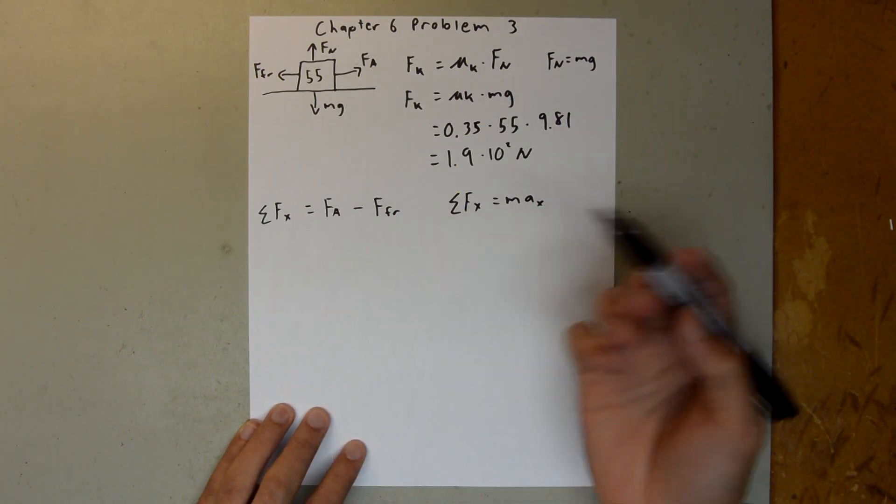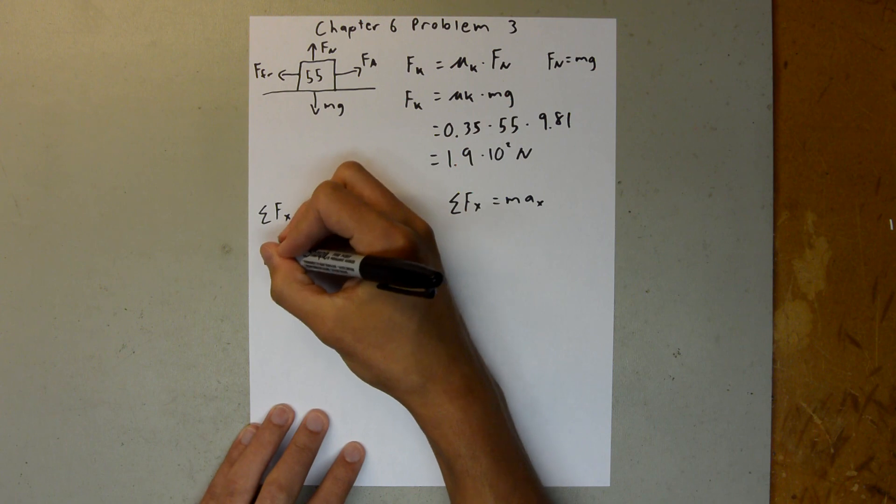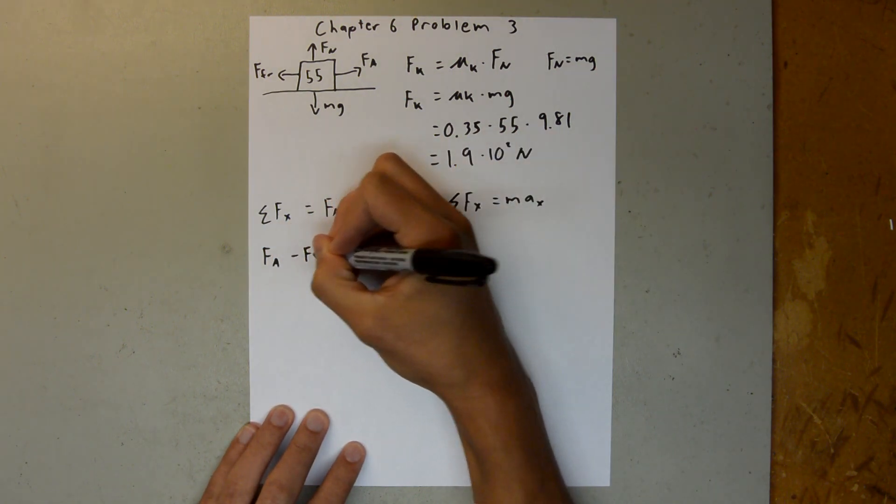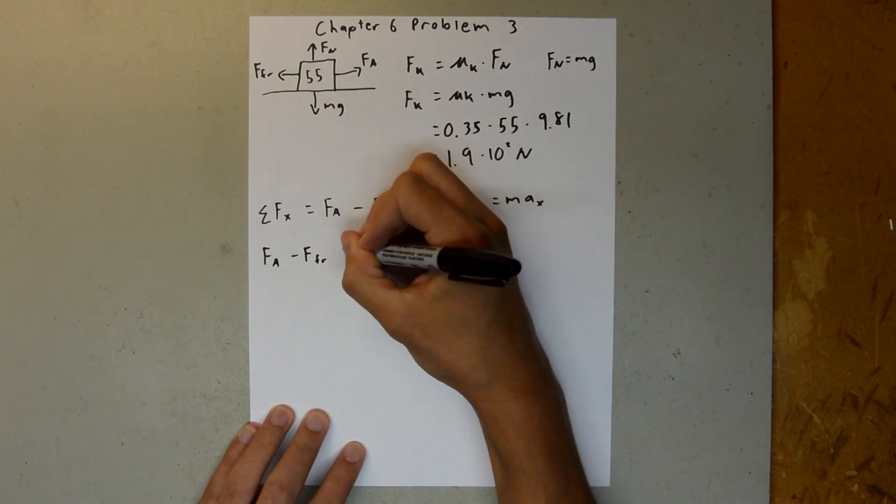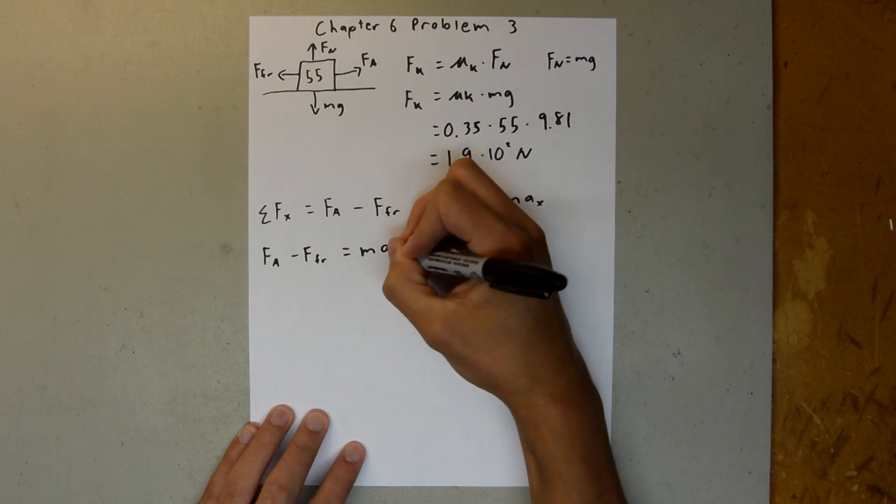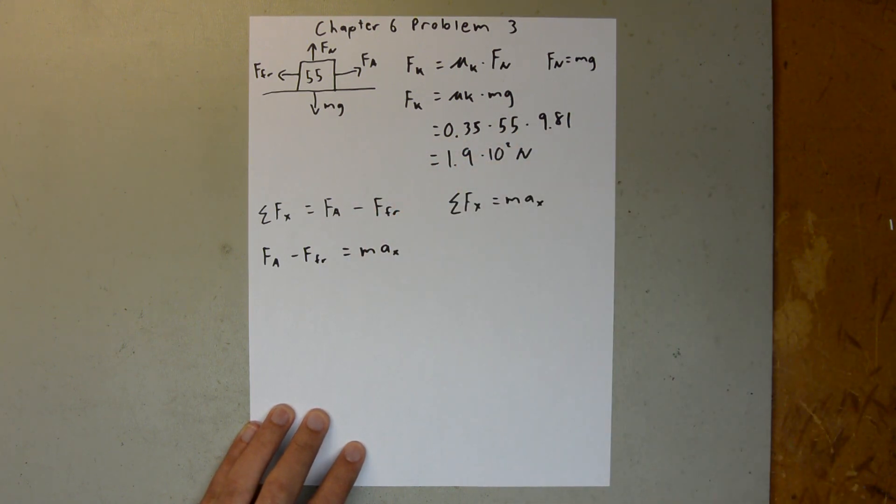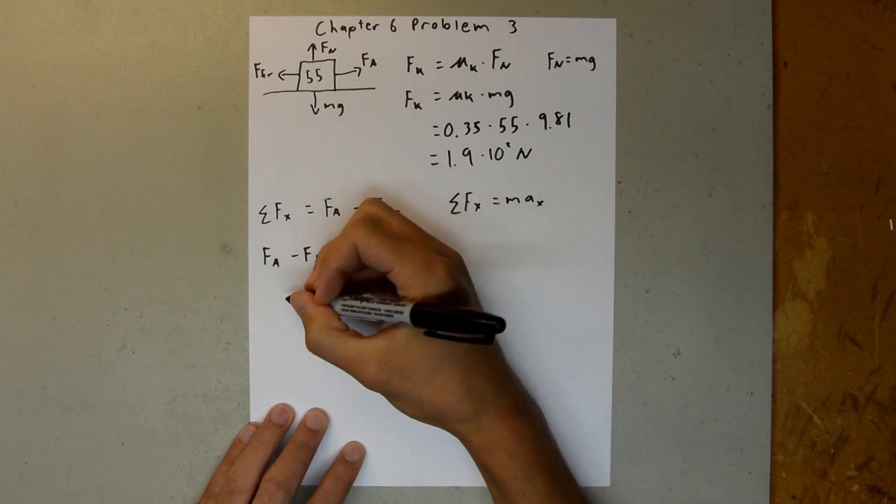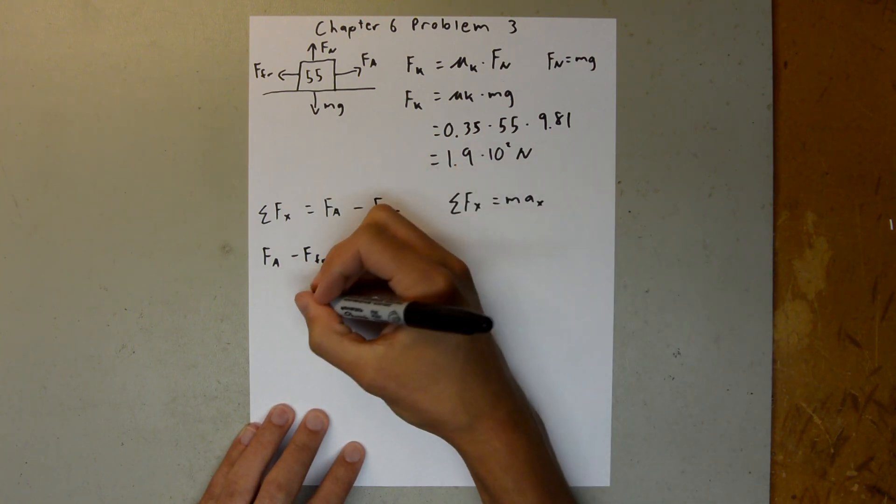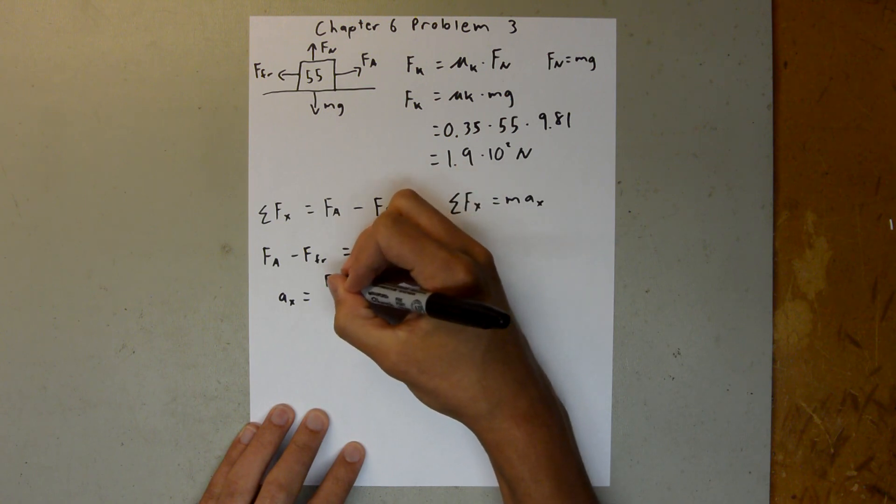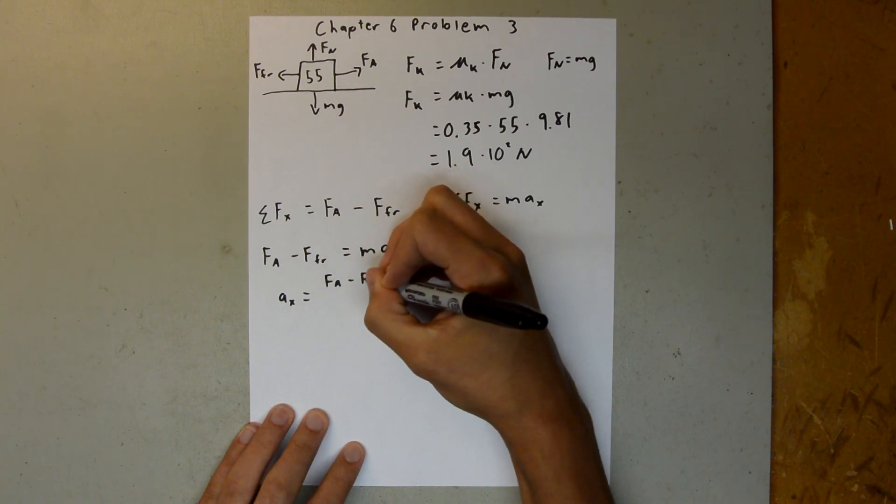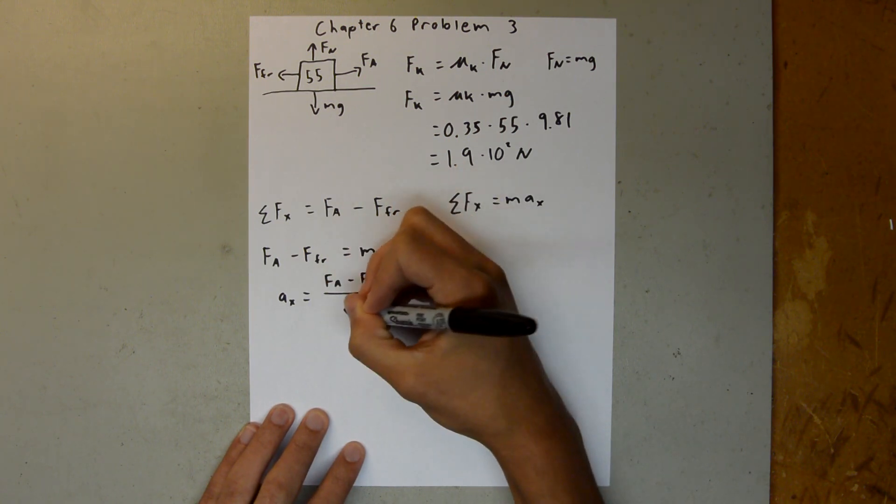And these are equal, so we can set them equal to each other and say, force applied minus the force of friction is equal to ma. And we are solving for a here, so we can divide both sides by the mass and say, a of x is equal to force applied minus force of friction over m.